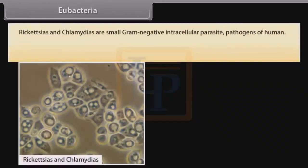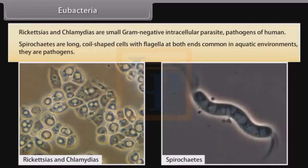Rickettsias and Chlamydias are small gram-negative intracellular parasites and pathogens of humans. Spirochetes are long coiled-shaped cells with flagella at both ends, common in aquatic environments, and are pathogens.